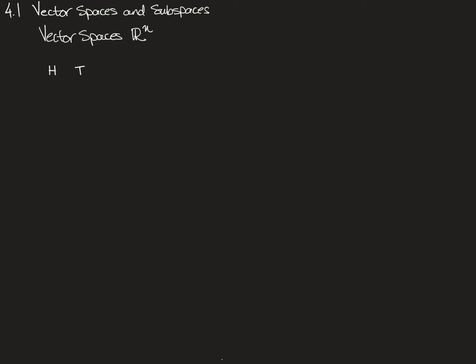Now if you were to flip a coin twice, you might get heads on the first one and heads on the second one, or heads on the first flip and tails on the second, or tails first and then heads, or tails both times. This collection of outcomes is the sample space for flipping a coin once, and this is the sample space for flipping a coin twice — it's all the possible outcomes for the entire experiment.